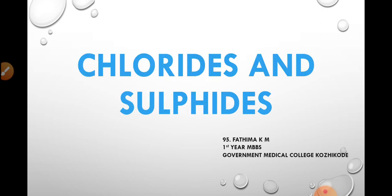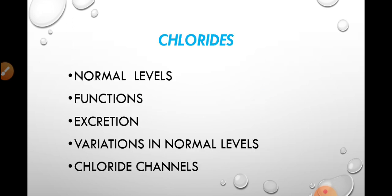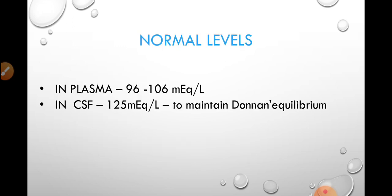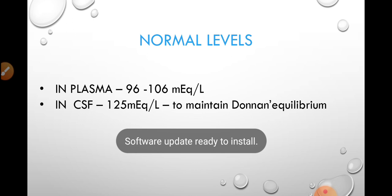Today we are going to discuss two major minerals: chloride and sulfur. Starting with chloride, we'll discuss its normal levels, functions, excretion, variations in normal levels, and chloride channels including cystic fibrosis. In plasma, the chloride level is about 96 to 106 milliequivalents per liter.